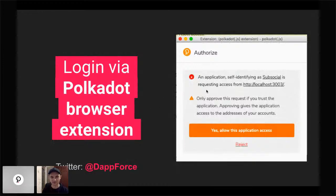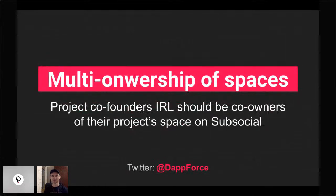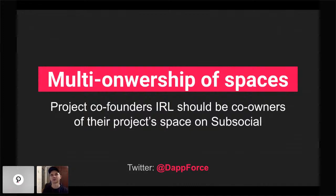Ownership of spaces and posts is implemented via an owner field that is an account ID. This means you can use multi-sig to co-own your spaces and your posts. It could be improved further to introduce shares of how much each account owns of a space, which could impact how big a reward each person receives depending on their ownership share — but we don't have this implemented yet. You can already use multi-ownership of spaces.